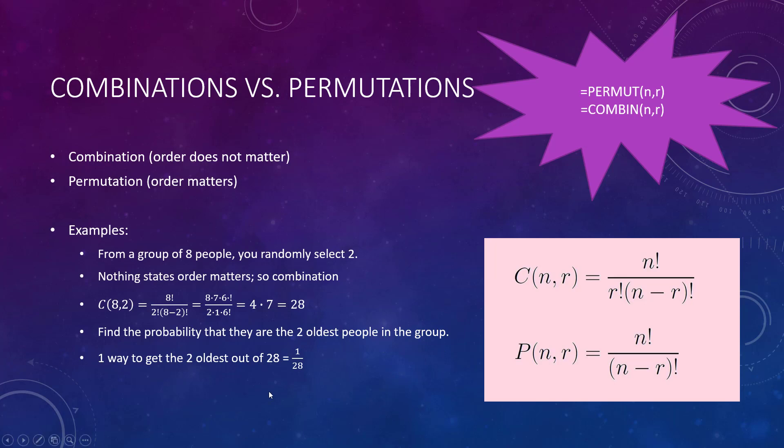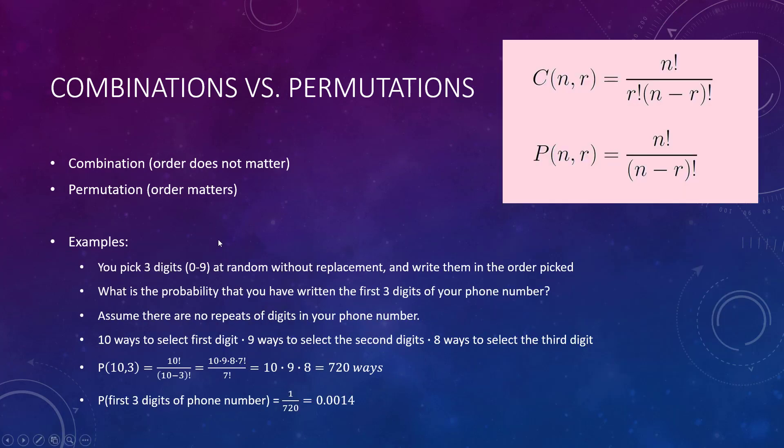Find the probability they are the two oldest people in the group - there's only one way to get the two oldest. Permutations is where order matters. You pick three digits at random without replacement and write them in the order picked. What is the probability you've written the first three digits of your phone number? The first three digits of your phone number, the order matters, otherwise you call the wrong party. Y'all even call people anymore? Text. Assume there are no repeats of the digits in your phone number: ten ways - zero through nine. I did that on my fingers. Ten to get the first digit, nine to get the second, eight to get the next and so on. This is my permutation formula. Notice here we're not dividing repeats, that's why the combination had that extra piece. So I can get 720 ways and then what's the probability I would actually get that.